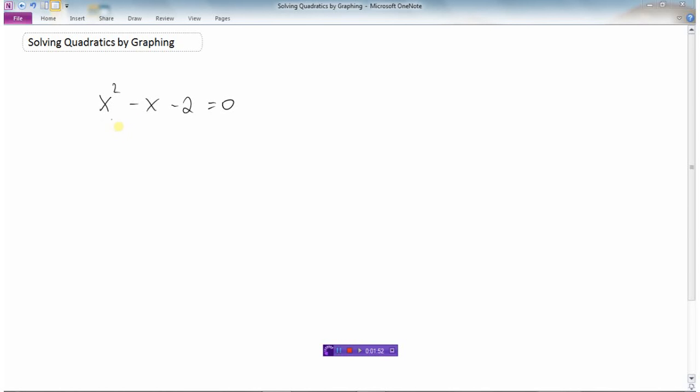Our first example here. Here's a quadratic equation x squared minus x minus 2 equals zero. Remember we can always graph a function by creating an xy table of values. Well you'll notice that there's no y in this equation. But we could easily turn it into a function by just saying, well let's let y equal x squared minus x minus 2.